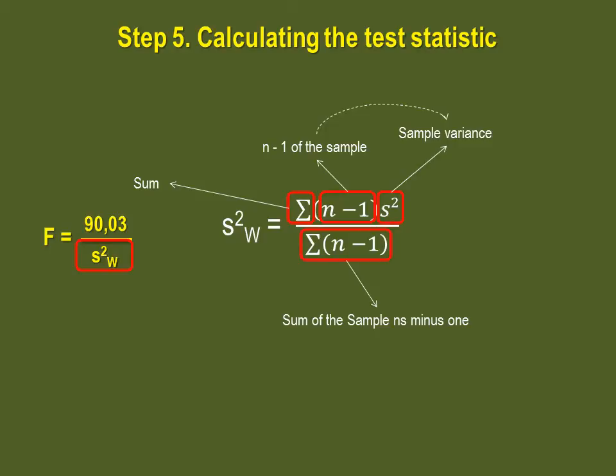This will be divided by the sum of the sample n's minus 1. To obtain that value, subtract 1 from every sample n and add them together. Let's do it with our values.